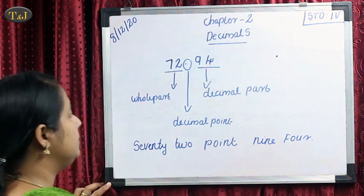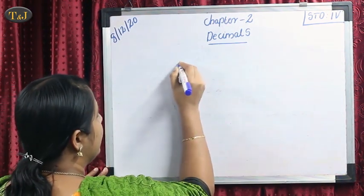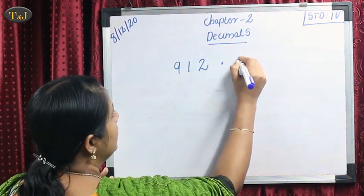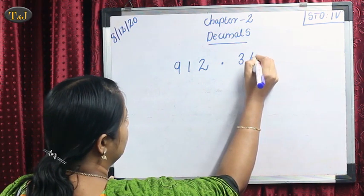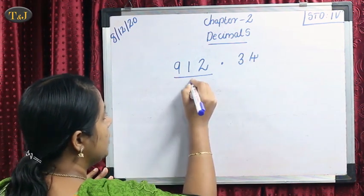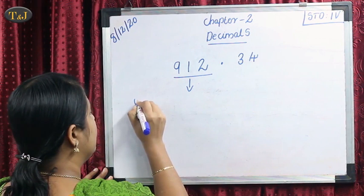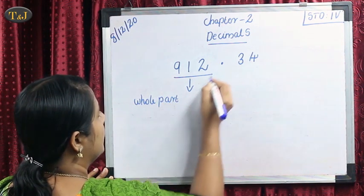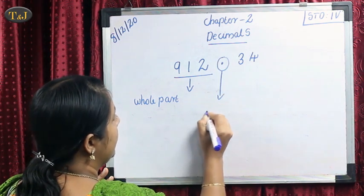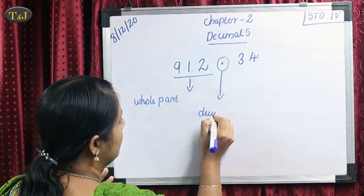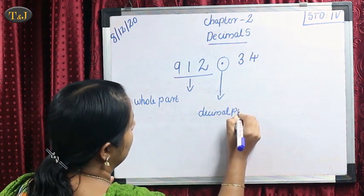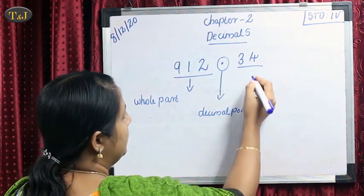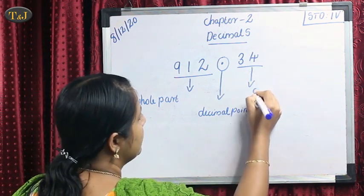Then one more example. Take the number 9, 1, 2 — then put the point — 3, 4. Before the point it is known as our whole part. This is our decimal point. And this part after the point is known as our decimal part.